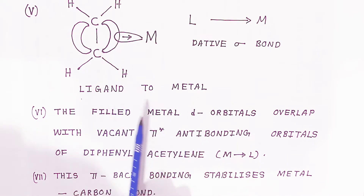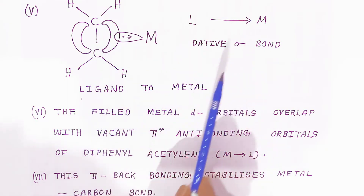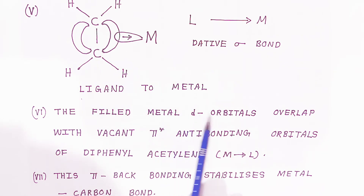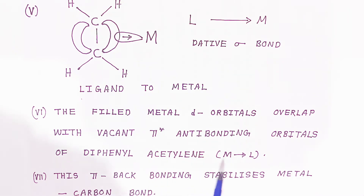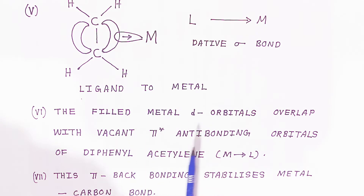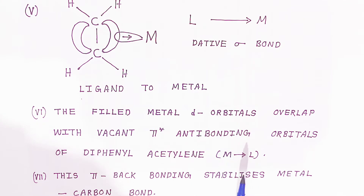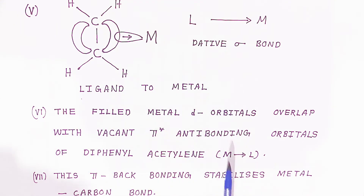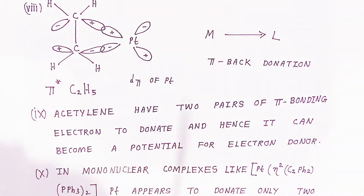Once the dative bond is formed, the filled metal d orbitals will also overlap with the vacant pi-star antibonding orbitals of diphenyl acetylene — that is the metal-to-ligand bond. So we have both types of bonds: ligand-to-metal and metal-to-ligand. Because of this, the pi back-bonding stabilizes the metal-carbon bond, and the stability of the complex increases.